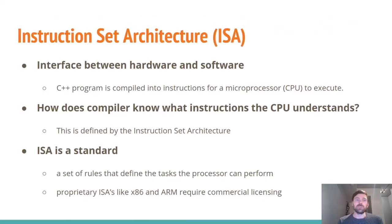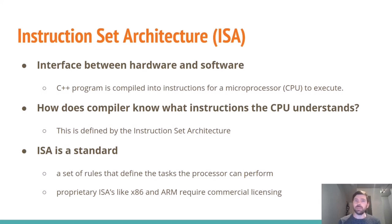RISC-V is an instruction set, or ISA — the interface between hardware and software. For example, a C++ program gets compiled into instructions for a microprocessor to execute. But how does the compiler know what instructions the CPU understands? This is defined by the instruction set architecture. Proprietary ISAs like x86 from Intel, which you'd find in your laptop, desktop, and most servers, and ARM, which you'd find in most smartphones — these require commercial licensing.